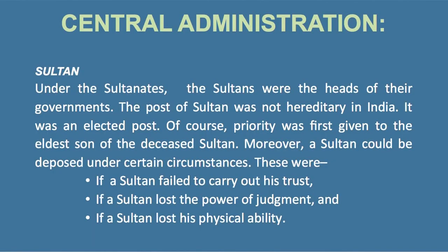Under the Sultanate, the Sultan was the head of the government. The post of Sultan was not hereditary in India — it was an elected post. Priority was first given to the eldest son of the deceased Sultan. Moreover, a Sultan could be deposed under certain circumstances: if a Sultan failed to carry out his trust, if a Sultan lost his power of judgment, or if a Sultan lost his physical ability.